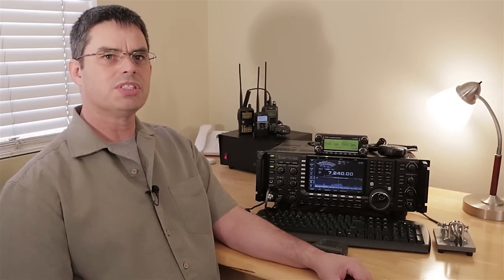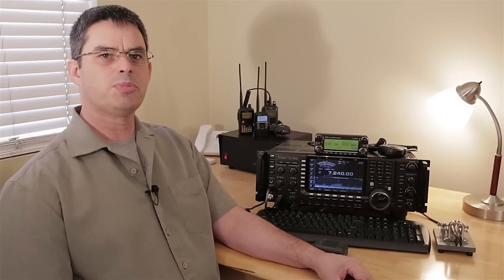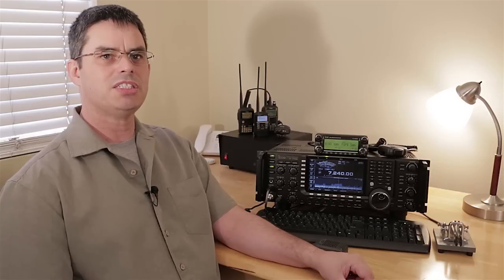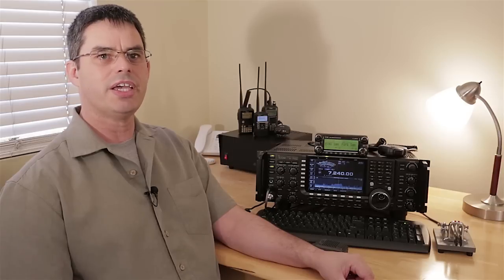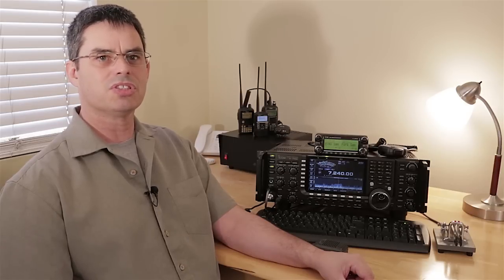A quick note about the differences between DSP and IFDSP. Regular DSP solutions occur in the Audio Frequency, or AF stage, whereas the IFDSP occurs before the signal detection circuit. An IFDSP provides many interference reducing tools that have a direct impact to the AGC in your radio. Thus, you reduce or remove an interfering signal, and it is taken out of your AGC circuit, and allows the AGC circuit to focus on the weaker signal.